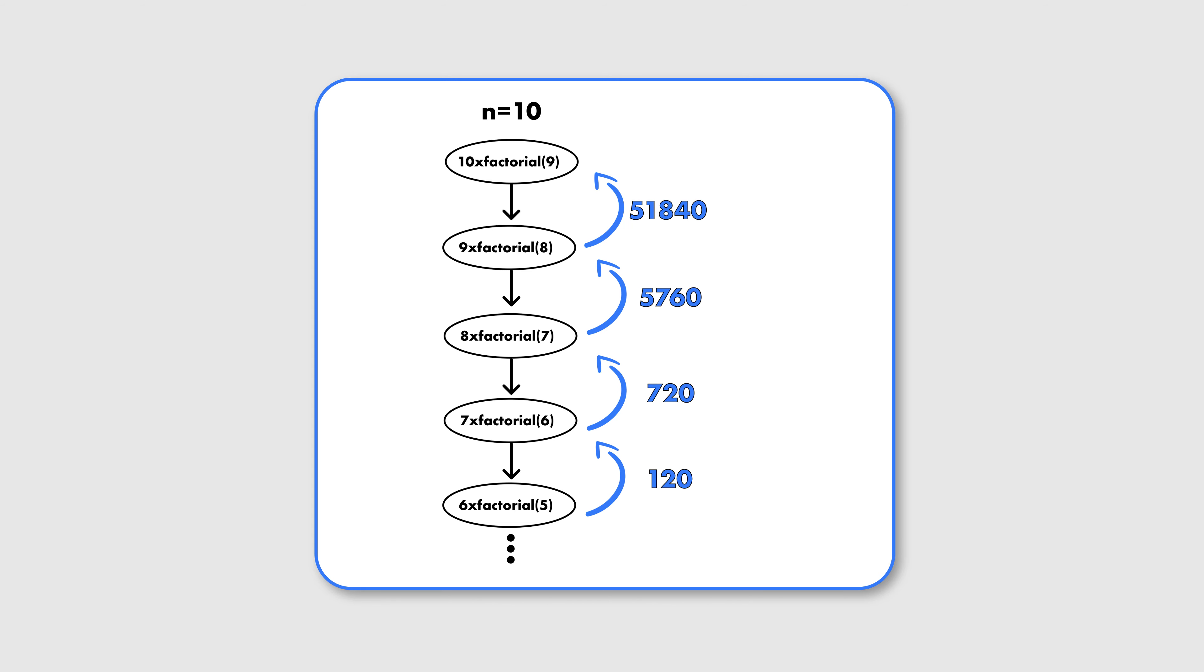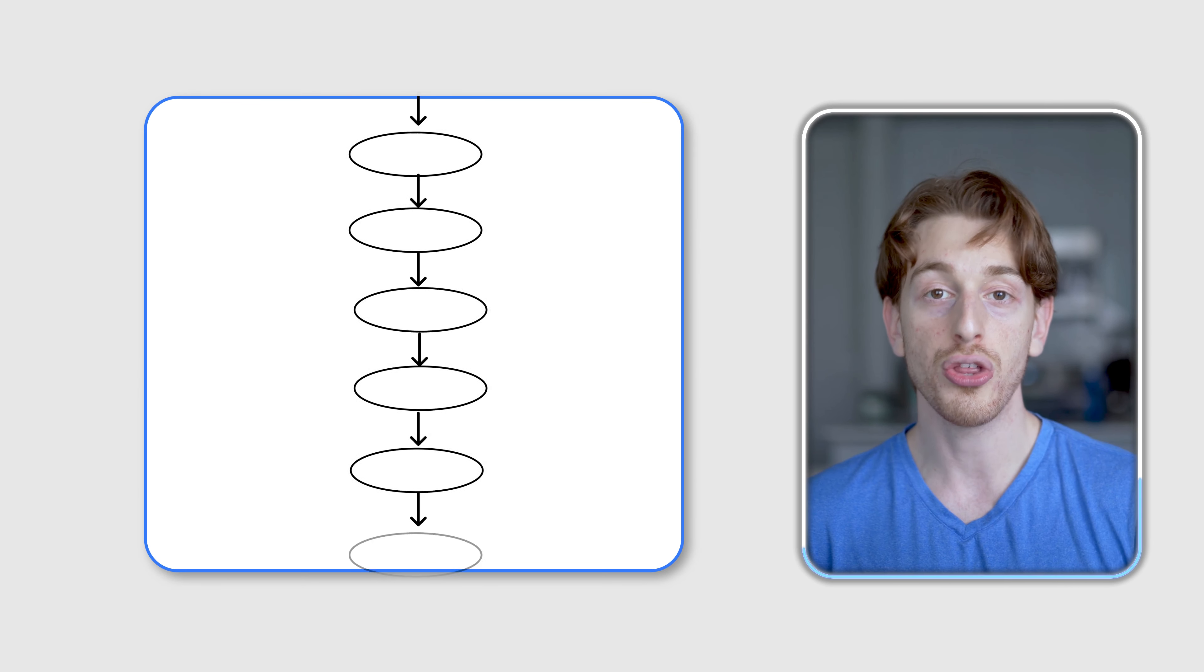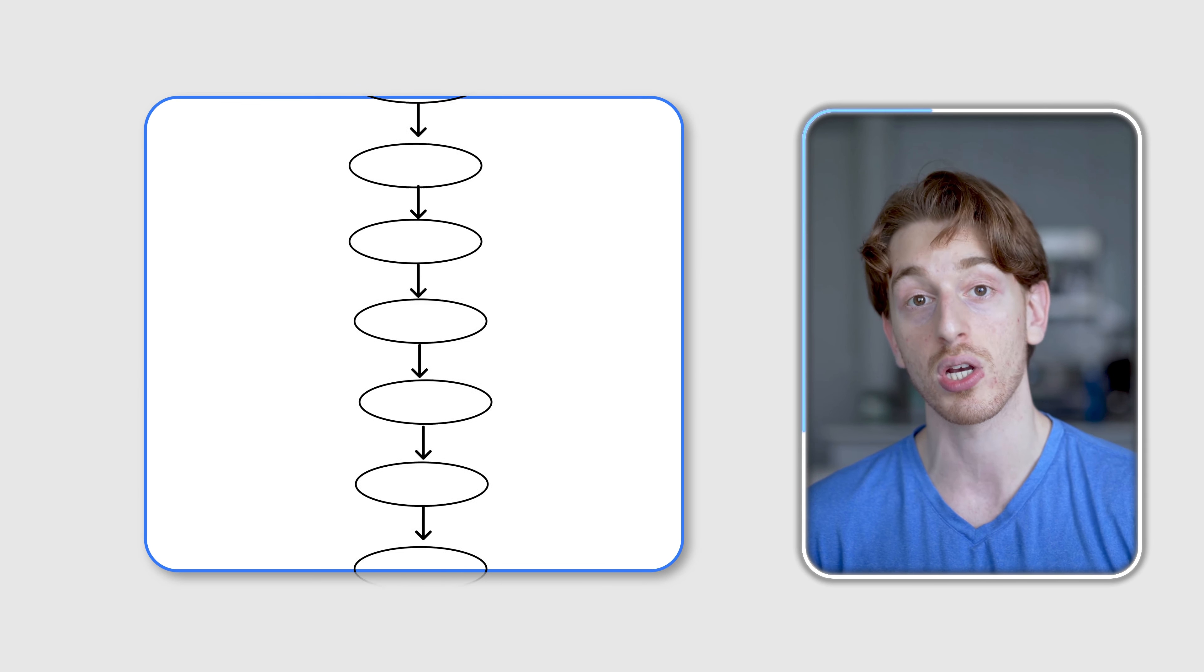And finally, the base case is a state that we know the value for and can return it directly. We must have at least one state that we know its value that each decision ultimately leads to, otherwise we will end up in an infinite recursion.